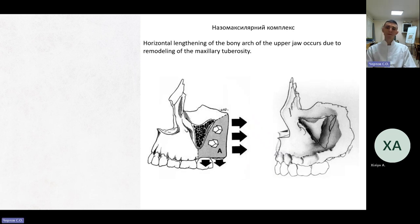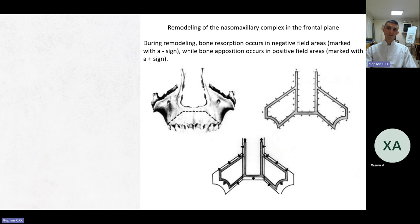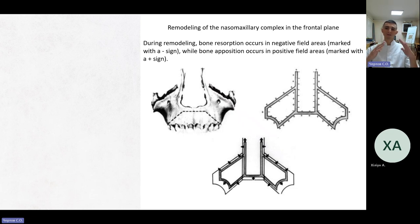A few words about the nasomaxillary complex. Horizontal lengthening of the bony arch of the aperture occurs due to remodeling of the maxillary tuberosity. During remodeling of the nasomaxillary complex in the frontal plane, bone resorption occurs in negative field areas marked with a minus sign, while bone apposition occurs in positive field areas marked with a plus sign. The nasomaxillary complex grows from up to down.